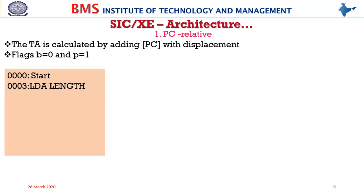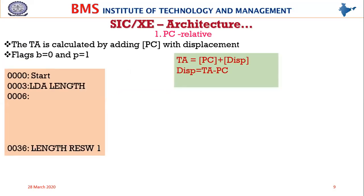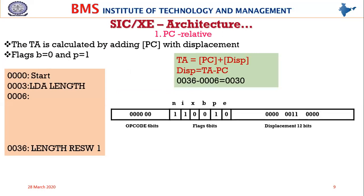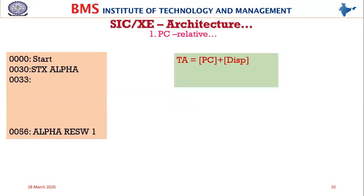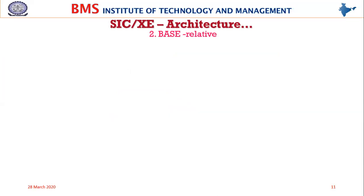In PC-relative addressing, the target address is calculated by adding the PC contents with the displacement. Majority of the instructions are format three, wherein n and i bits will be one and one, b is zero, x is zero, e is zero. We cannot have PC-relative with indexing — that's not possible. But we have seen some examples of PC-relative addressing modes.